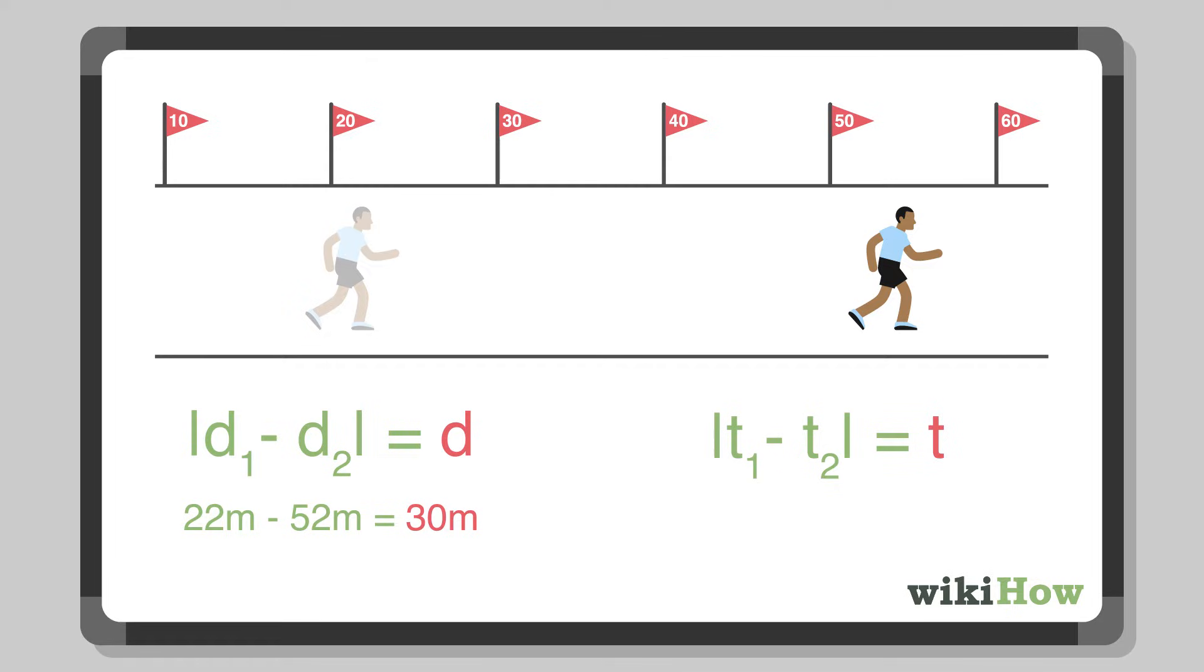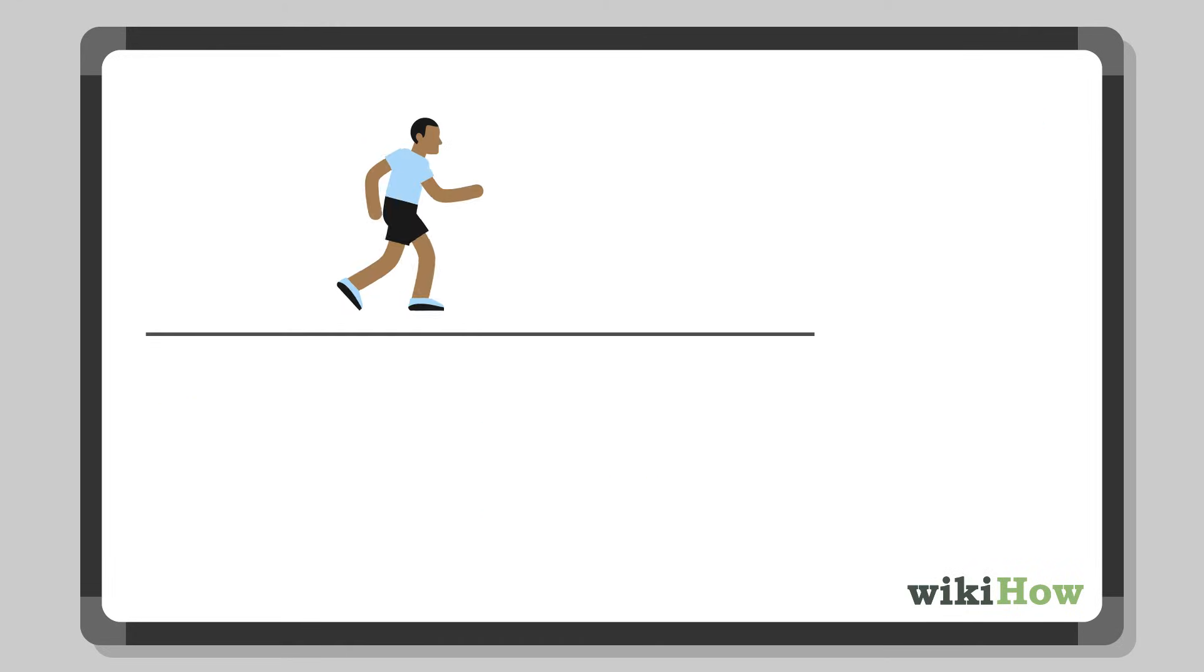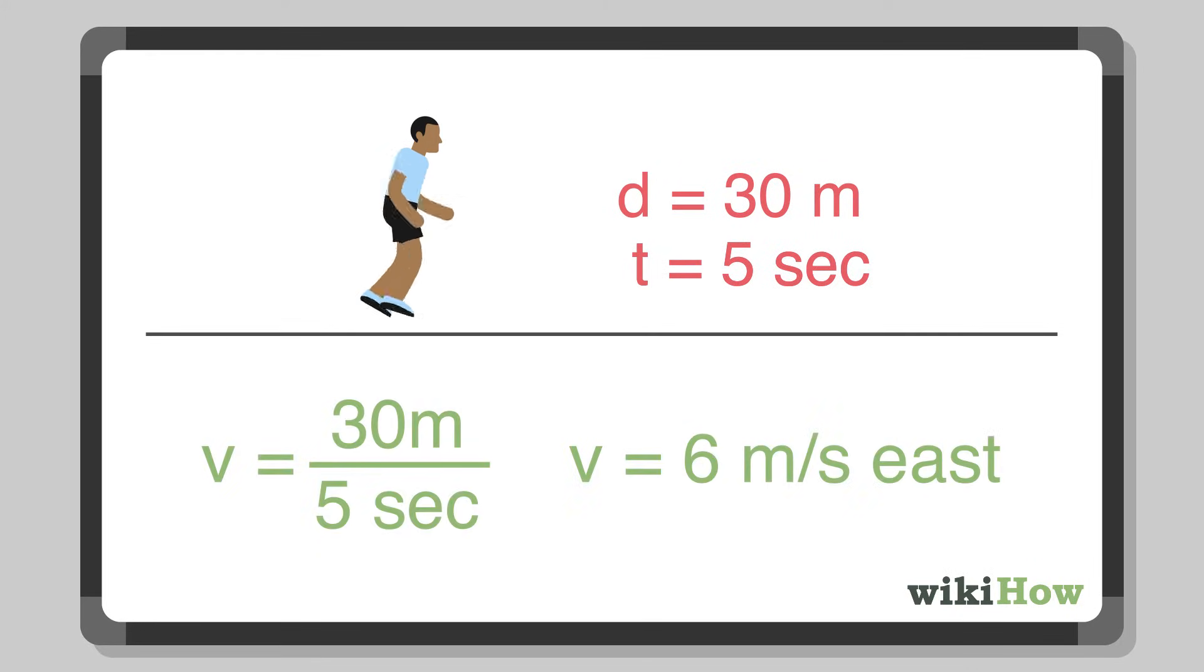Similarly, if they began their sprint at 5:35:01 PM and ended it at 5:35:06 PM, you can find the time by subtracting 1 from 6, giving you 5 seconds. This will tell you that they ran 30 meters in 5 seconds, which means that they maintained an average velocity of 6 meters per second east.